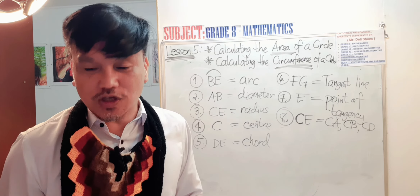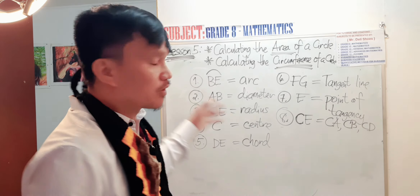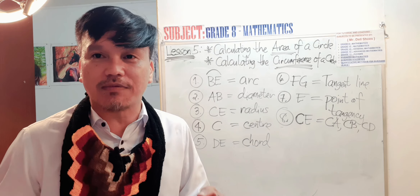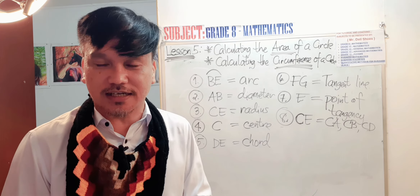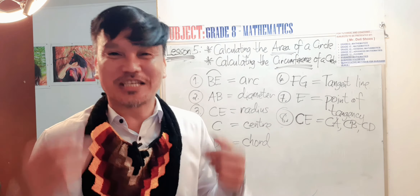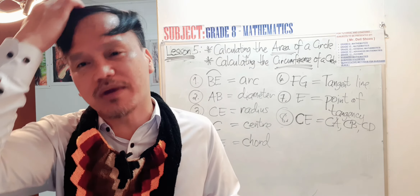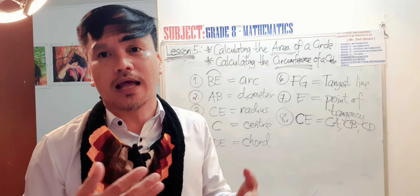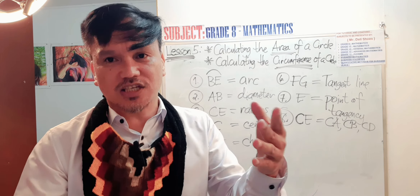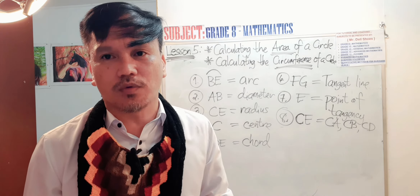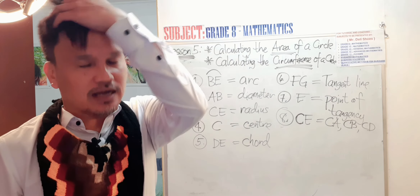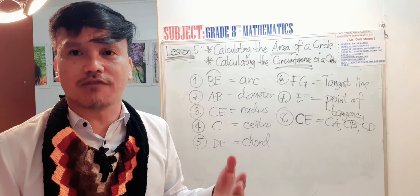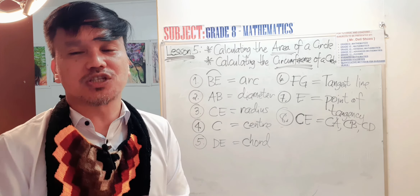Thank you so much. The next part is part three — calculating the area of the circle with the use of the formula given a diagram, and word problems on calculating the area and circumference of the circle. This is Mr. Delicious. Please subscribe my channel and inform others to be part of my tutorial and coaching for mathematics, statistics, science, and physics. I have been teaching for more than 20 years and this is a free tutorial for all of you.